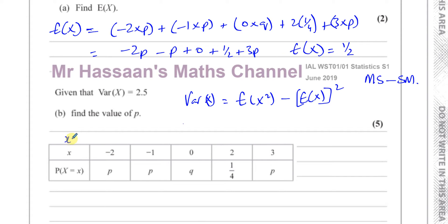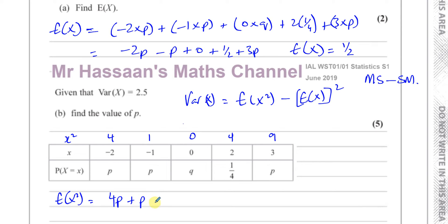I'm going to make another row for X squared. Minus 2 squared is 4, minus 1 squared is 1, 0 squared is 0, 2 squared is 4, and 3 squared is 9. The expected value of X squared is found the same way — multiply X squared by its probability: 4 times P, plus 1 times P, plus 0 times Q, plus 4 times a quarter which is 1, plus 9 times P. That gives 14P plus 1 as the expected value of X squared.